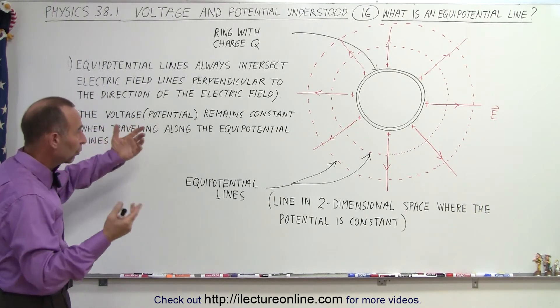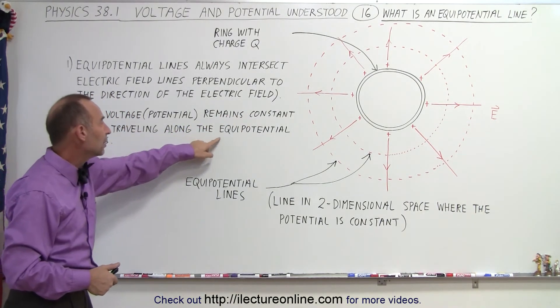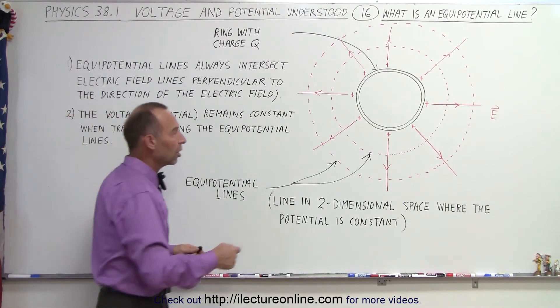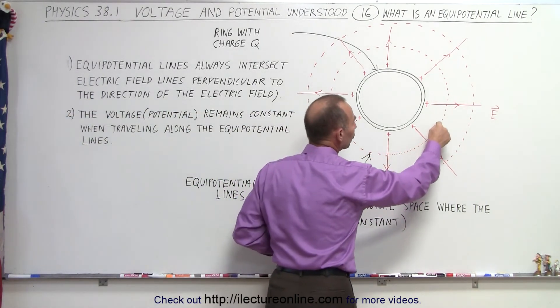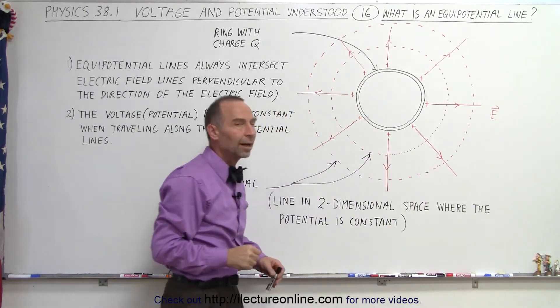The voltage, or the potential, whichever way you want to call it, remains constant when traveling along the equipotential lines. So as long as you stay along the line, the voltage will never change. Whatever the voltage is, it will remain constant anywhere along that line.